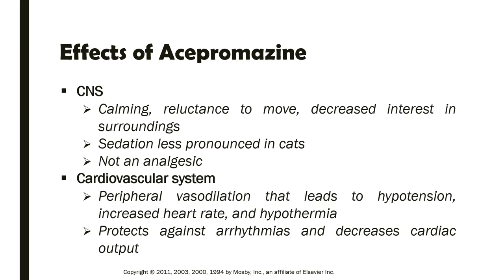A recap of the pharmacological effects of acepromazine by body system: for CNS effects, it has a calming effect — the animal is reluctant to move, has decreased interest in its surroundings, but remains conscious and aware. It produces sedation, though this is less pronounced in cats, so acepromazine is more commonly used in dogs. It has no analgesic property and can be combined with opioids to provide analgesia.